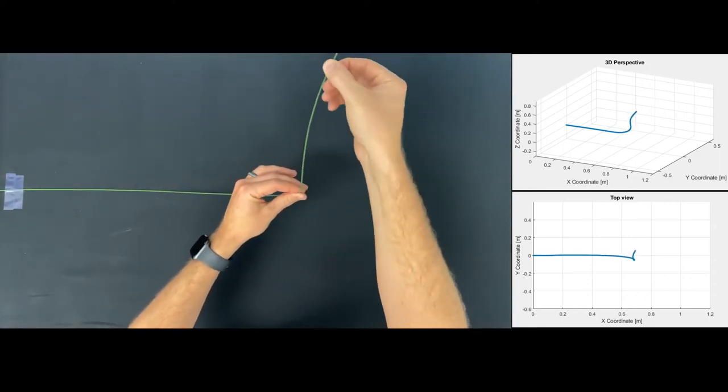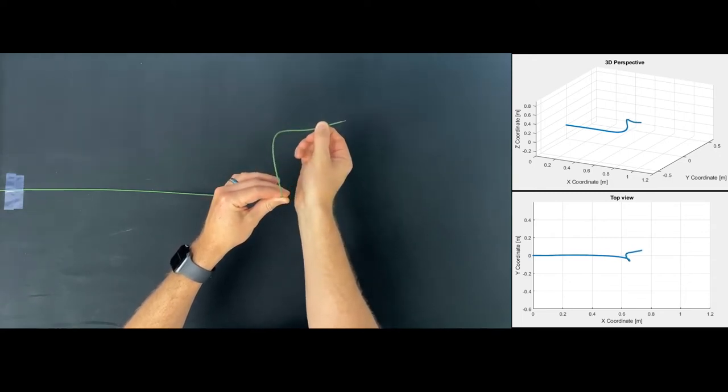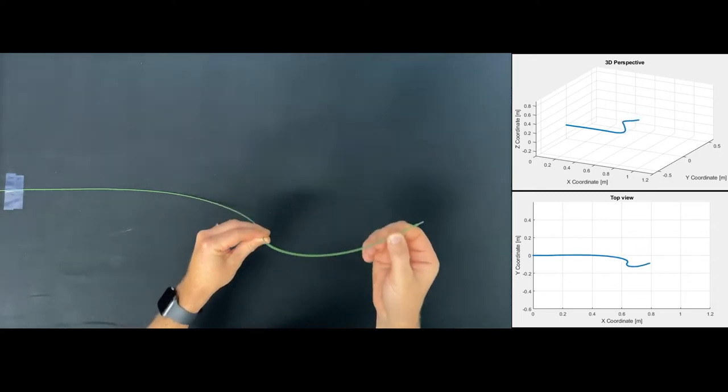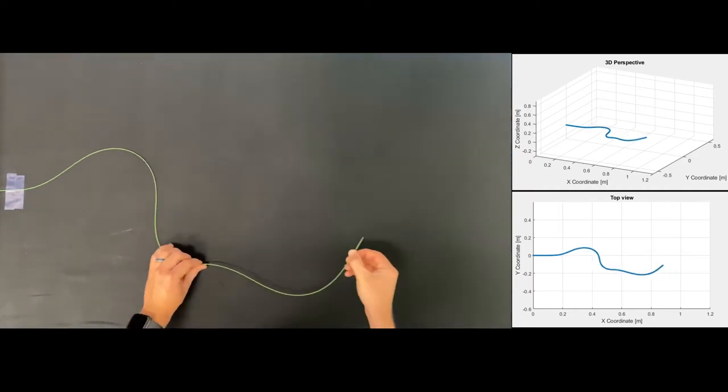We accomplish this by determining bending and twist continuously along the entire length of the wire-like sensor with submillimeter resolution, enabling users to obtain and visualize highly accurate measurements of complex and tortuous paths.